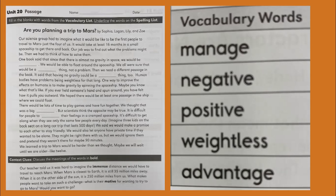There would be lots of time to play games and have fun together. We thought that was a big blank. But scientists think the opposite may be true. It is difficult for people to blank their feelings in a cramped spaceship. It's difficult to get along when they see the same few people every day. Imagine three kids on the back seat on a long car trip that lasts 500 days.